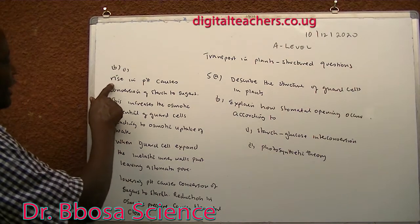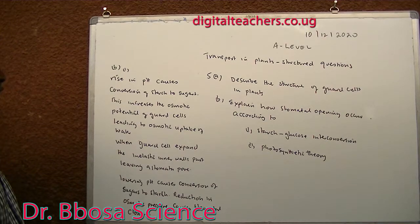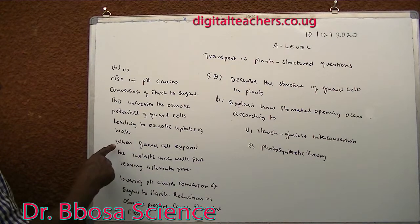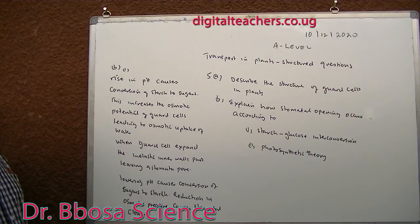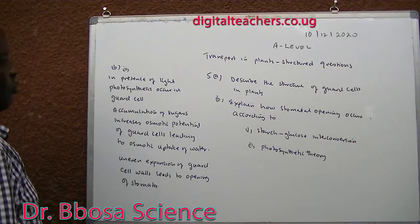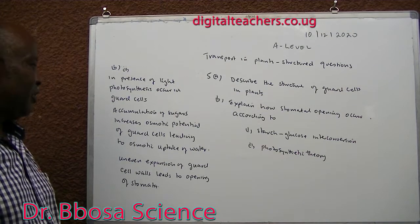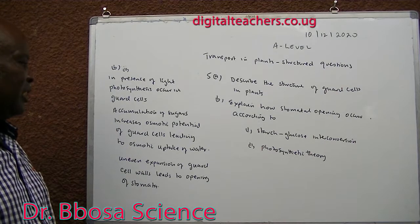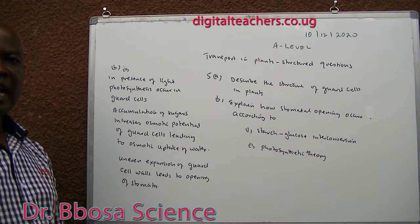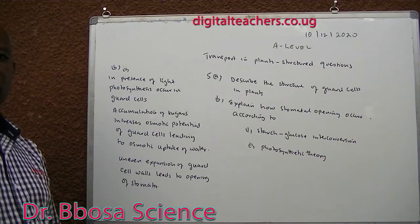B part one, starch-glucose interconversion: raising the pH causes conversion of starch to sugars. This increases osmotic potential of guard cells, leading to osmotic uptake of water. When the guard cells expand, the inelastic inner walls part, leaving a stomatal pore. Lowering pH causes conversion of sugar to starch; reduction in osmotic pressure causes stomata closure. B part two, photosynthetic mechanism: in the presence of light, photosynthesis occurs in guard cells. The accumulation of sugars increases osmotic potential of guard cells and osmotic uptake of water, and expansion of the guard cell wall leads to opening of the stomata.